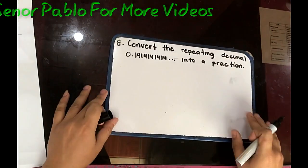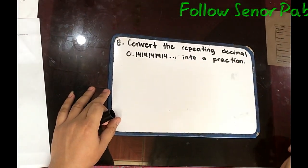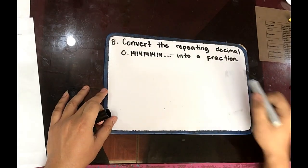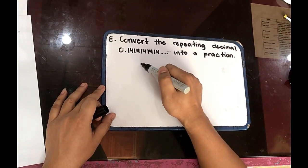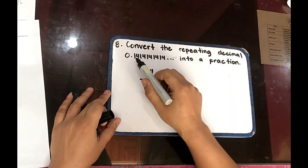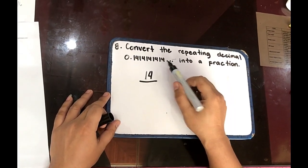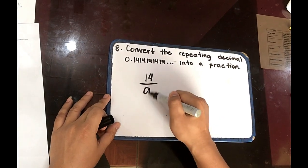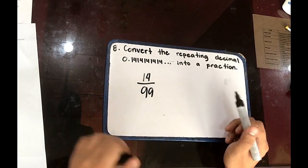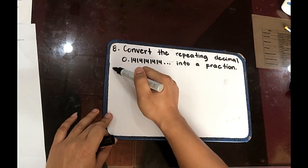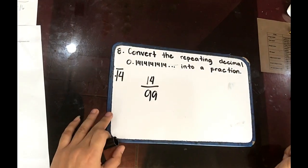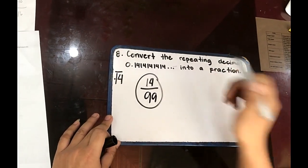Number 8. Convert the repeating decimal 0.141414 and the ellipse sign into a fraction form. So we can rewrite this as 14 over, since this is repeating, 99. If you want an explanation more, that is equivalent to 14 bar, 0.14 bar will give us 14 over 99.